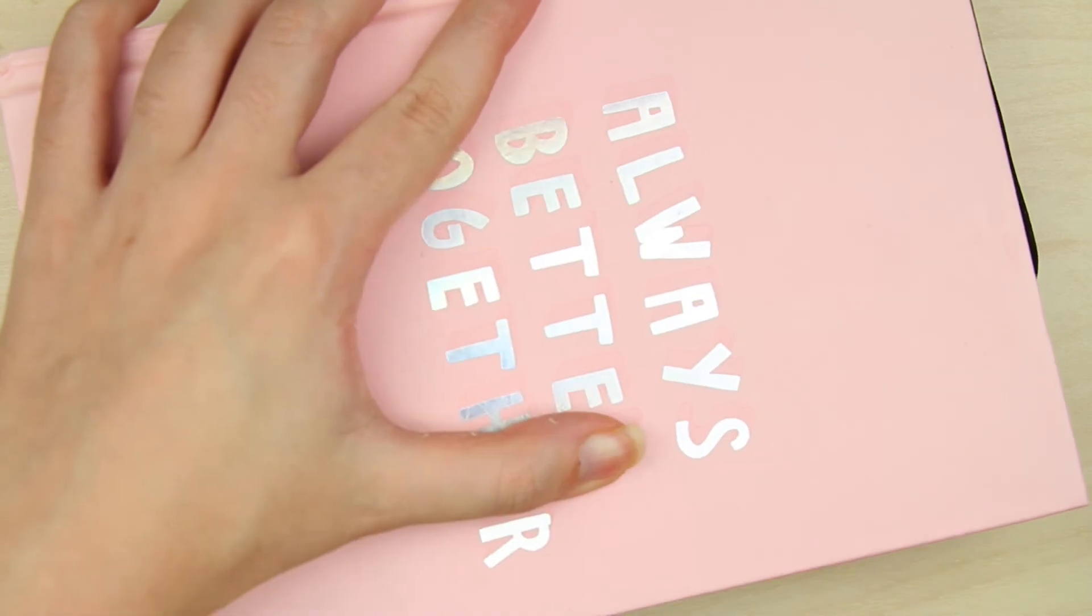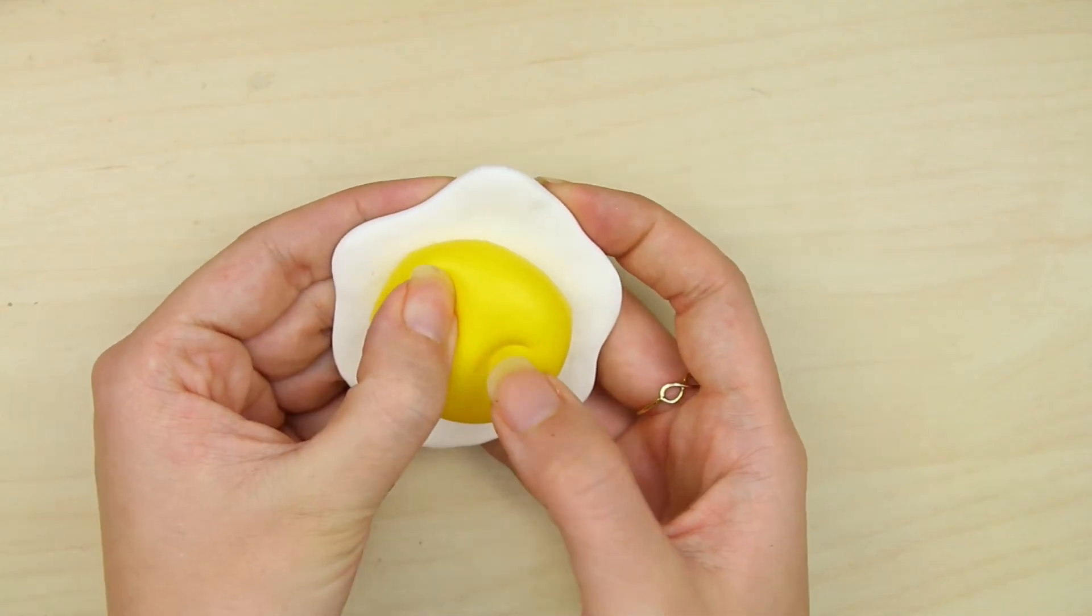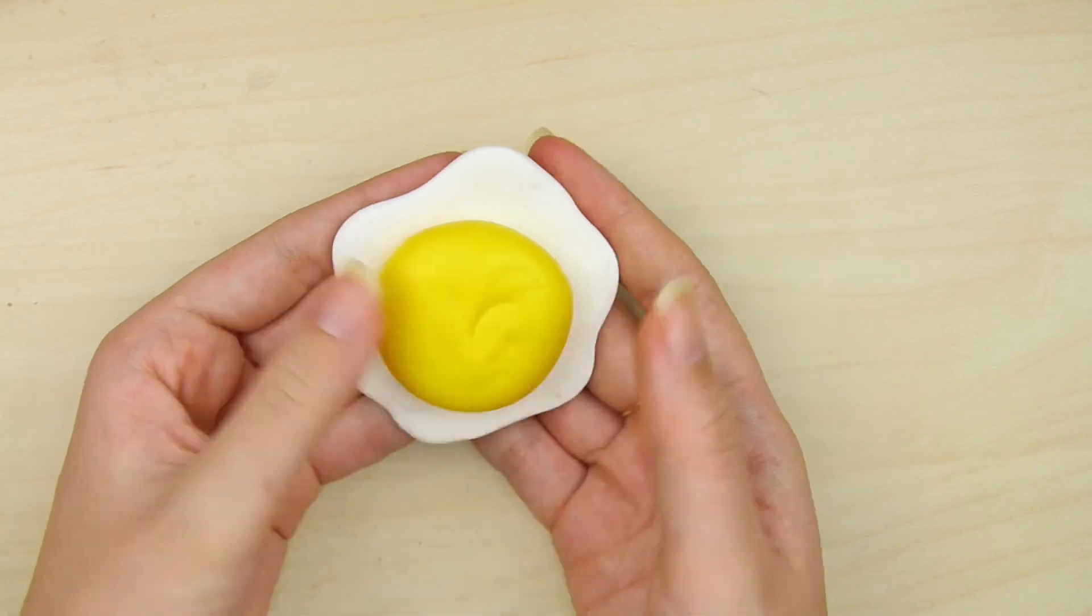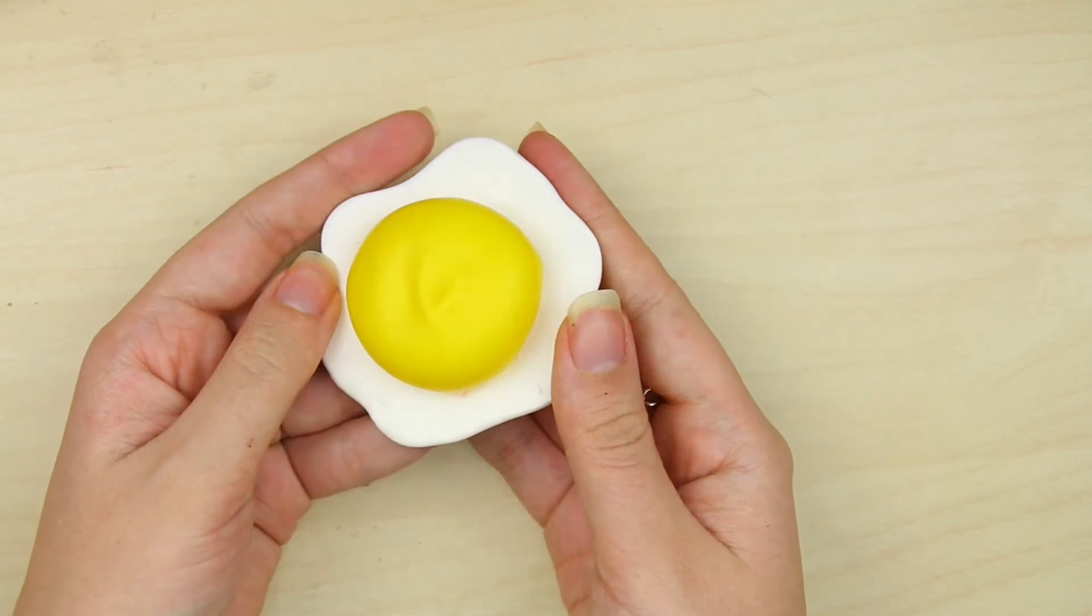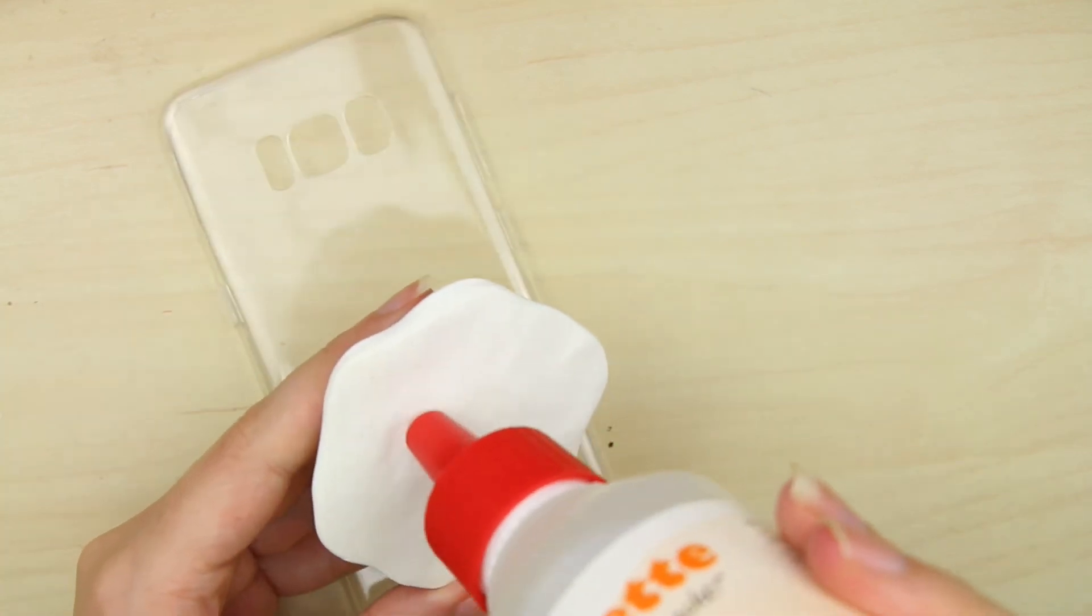Let it dry overnight just to make sure. And the next day you should have something like this, a squishy fried egg. Now just glue it to your phone case and you're done.